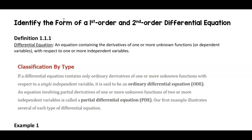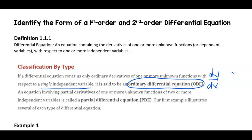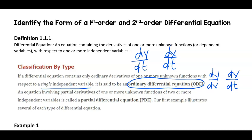We have ordinary differential equations and we have partial differential equations. In this class we're only going to look at ODEs — ordinary differential equations — which means we have a single independent variable, like dy/dx or dx/dt. Partial differential equations is a whole other class. However, you might have dy/dt and dx/dt in your equation because you could have two dependent variables but only one independent variable of time.